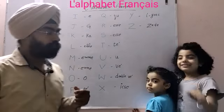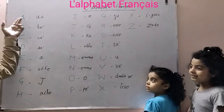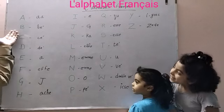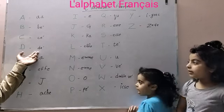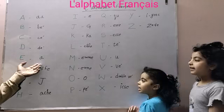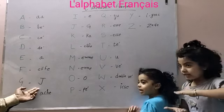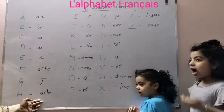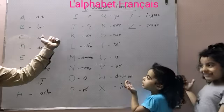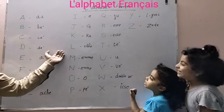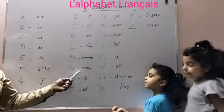Starting with A. A is called A. B is called B. C. D. E. F. G. H. I. J. K. L. M. N.